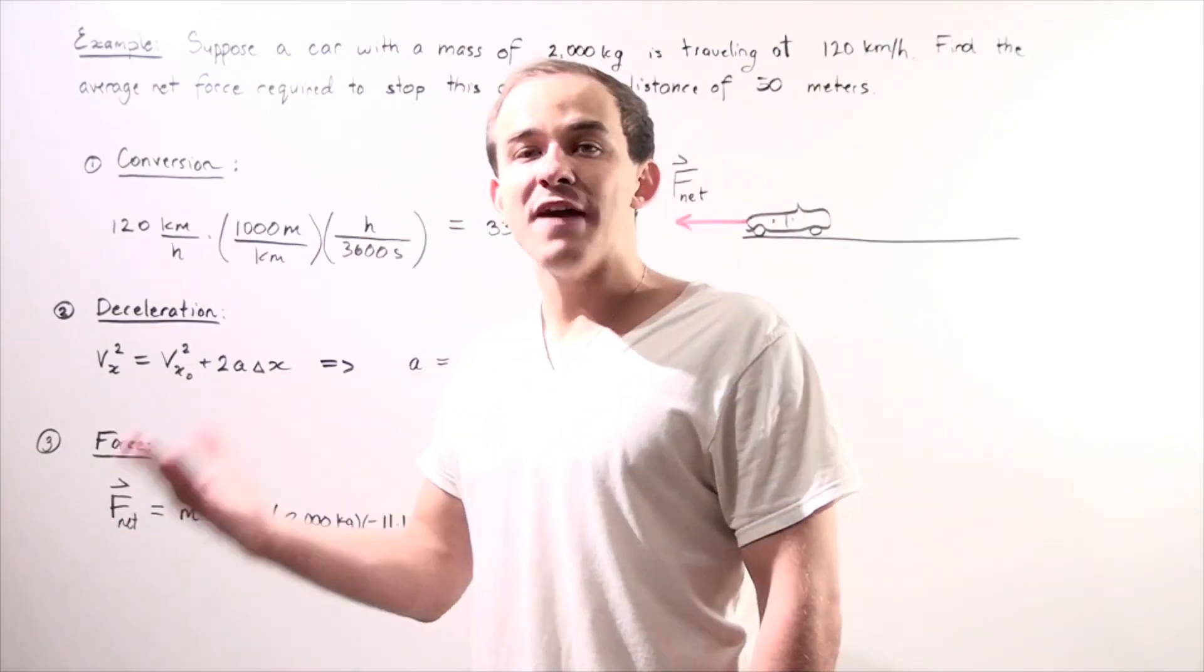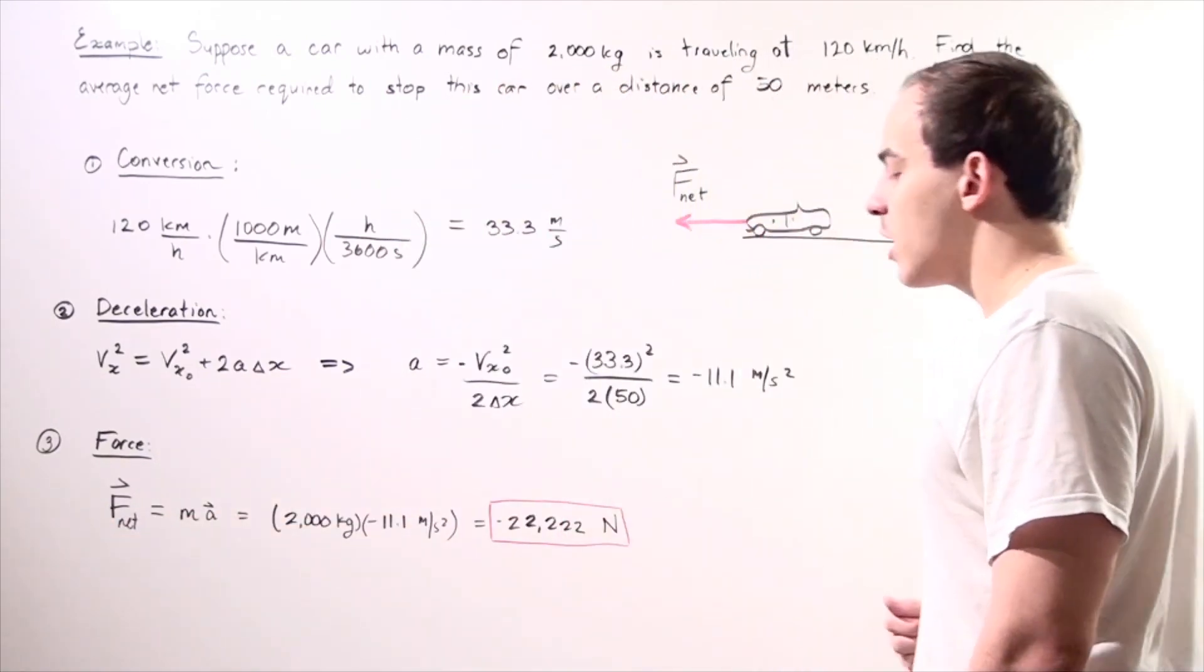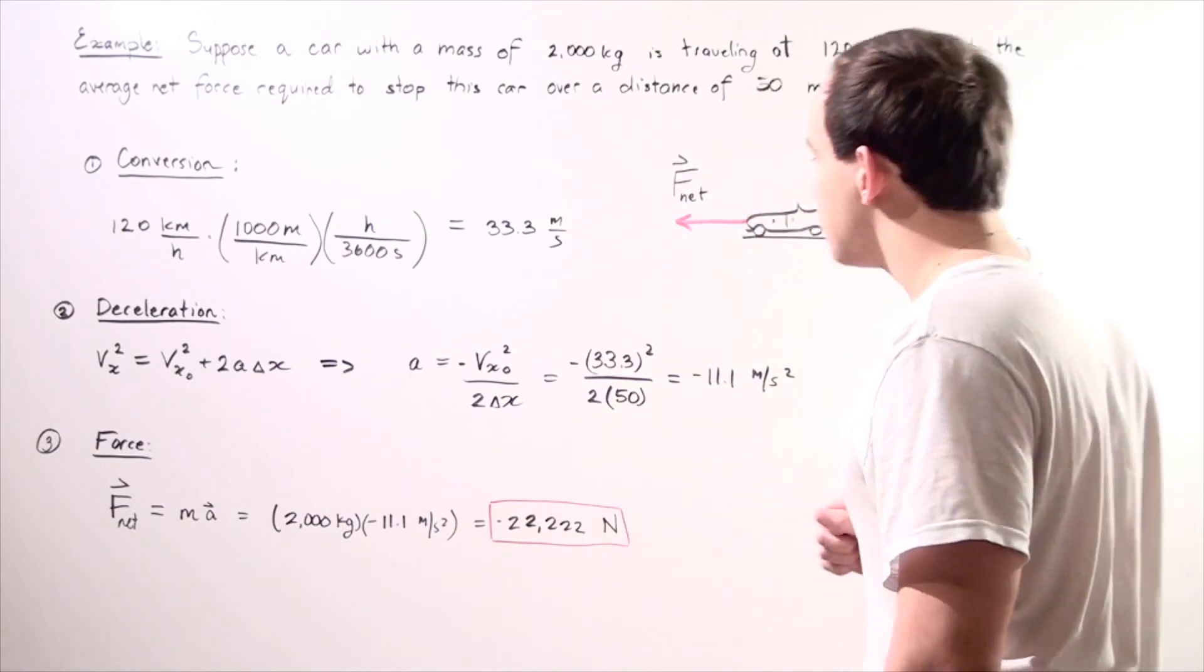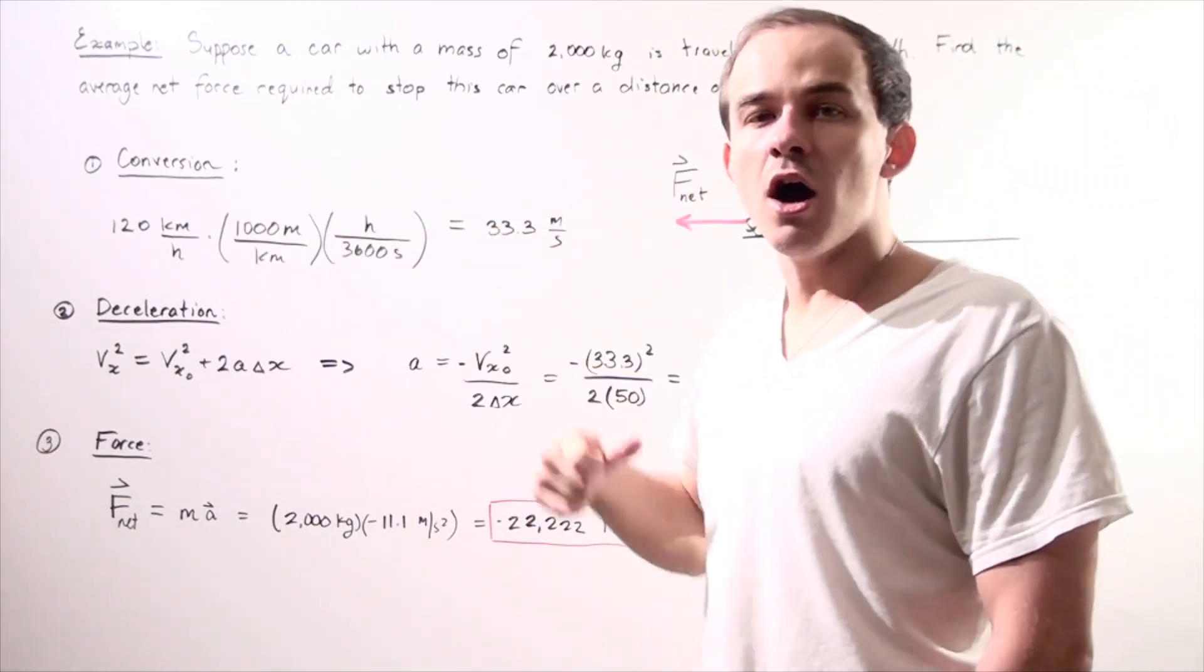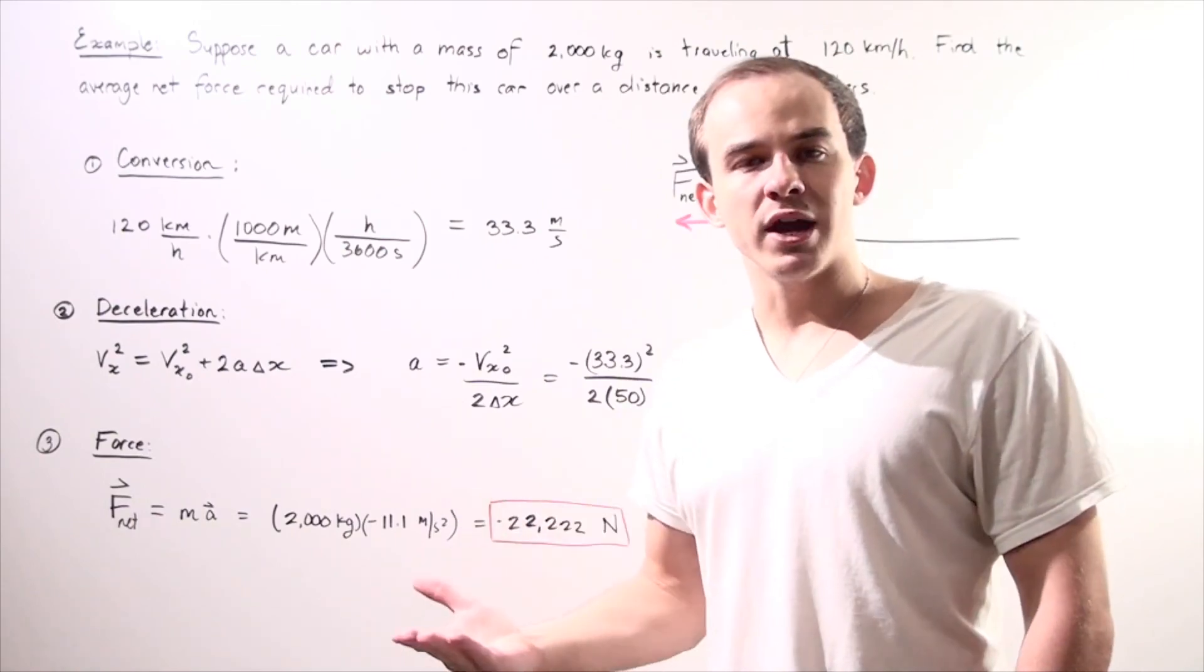Remember, our net force is a vector, so we have magnitude as well as direction. The negative simply means it's pointing in the opposite direction of motion.